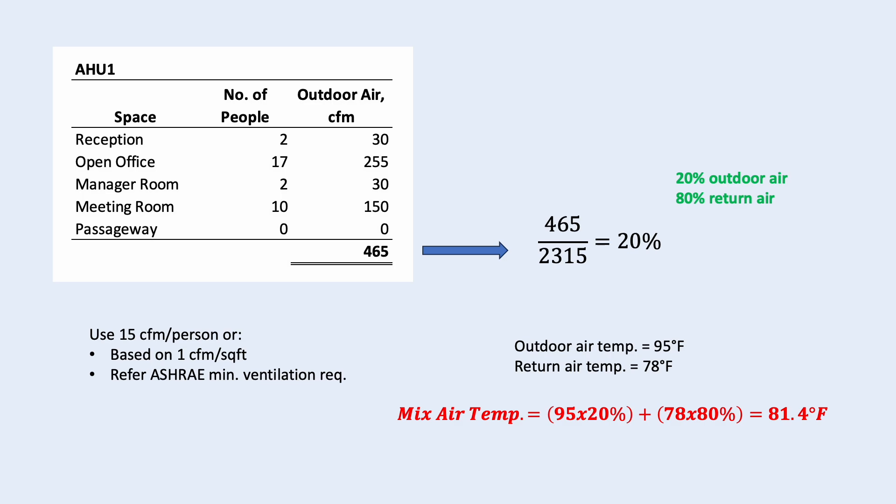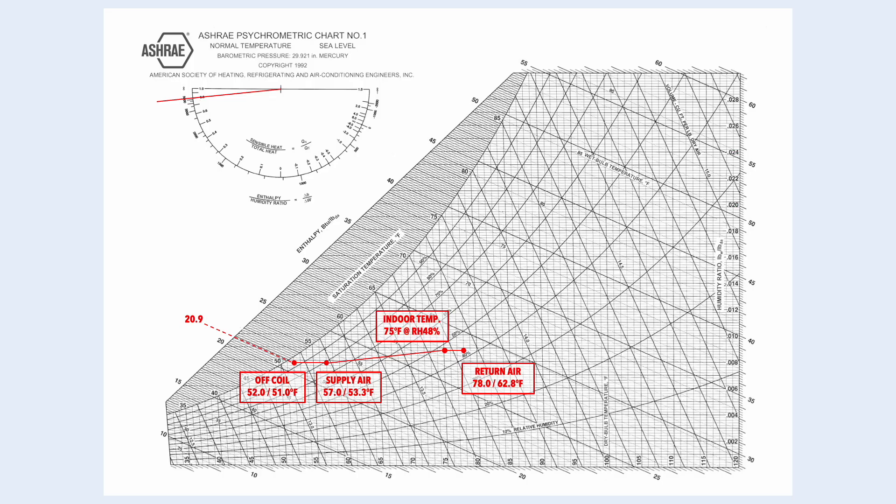However, if the outdoor air is introduced via a separate fan, you may want to add about 1 to 2 degree Fahrenheit to account for the fan motor heat gain. So now, on the psychrometric chart, we mark the outdoor air temperature at 95 degree Fahrenheit dry bulb, 82 degree Fahrenheit wet bulb.